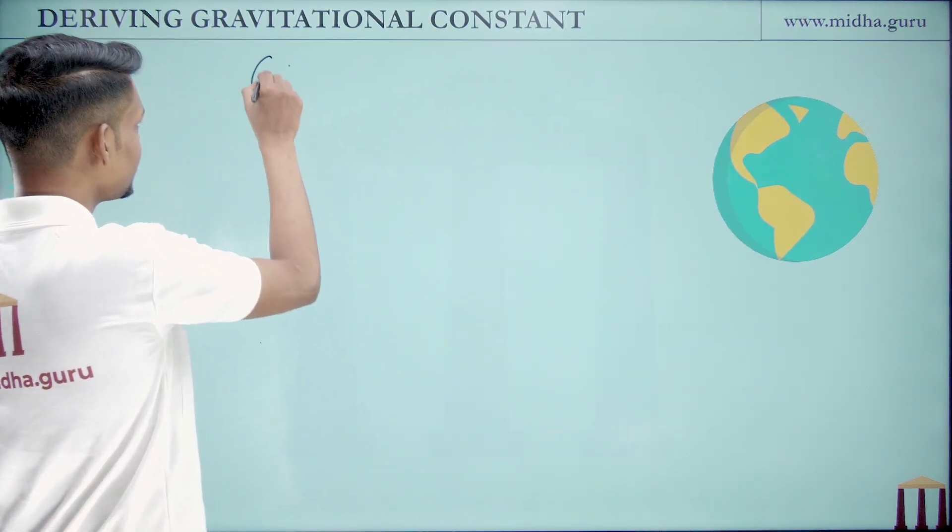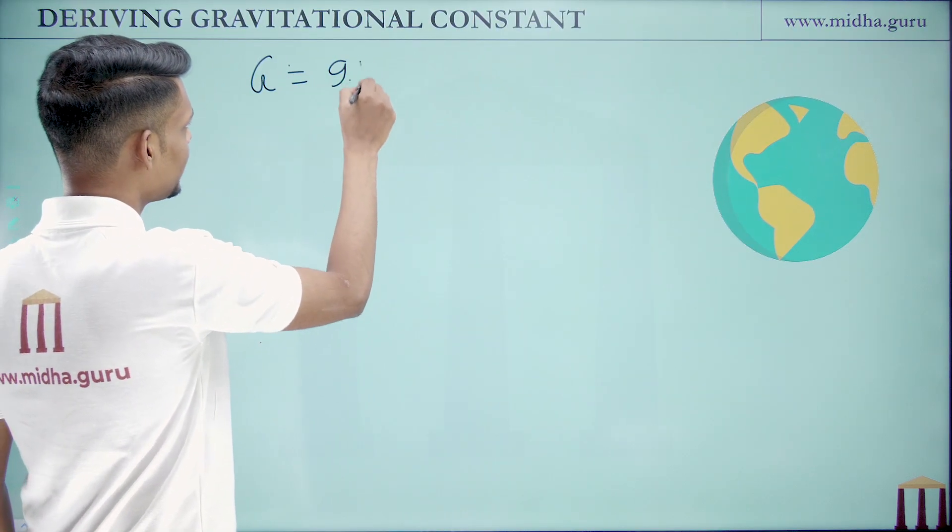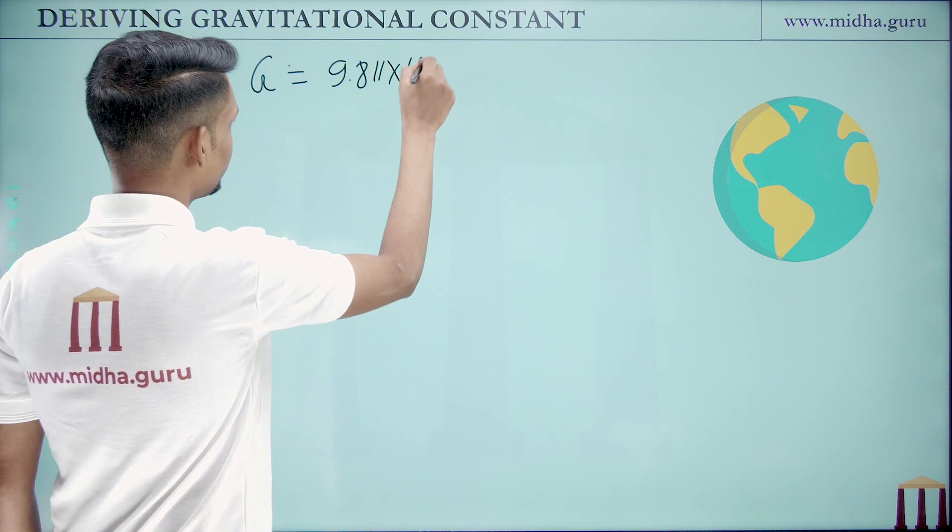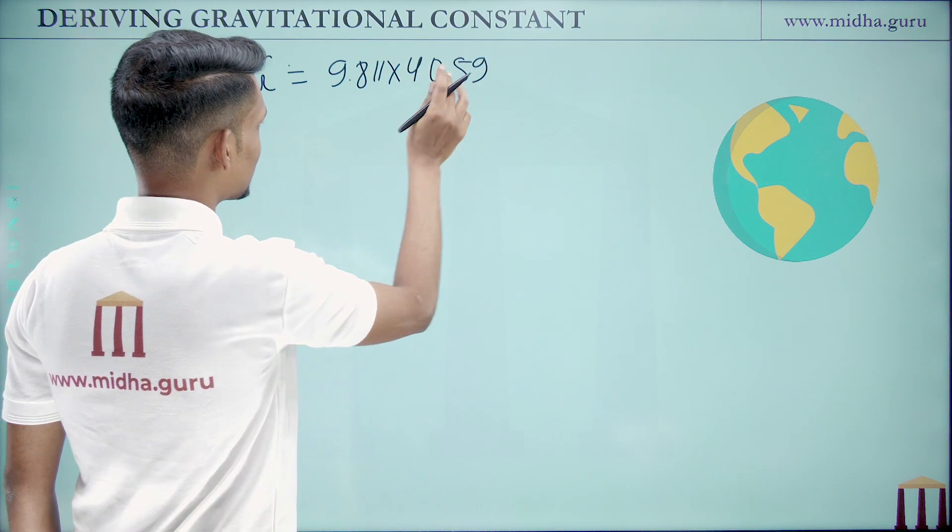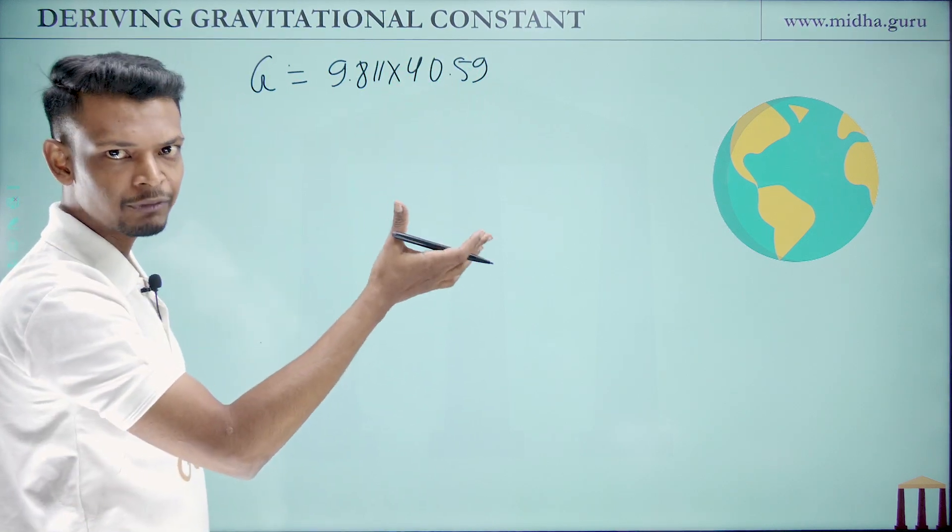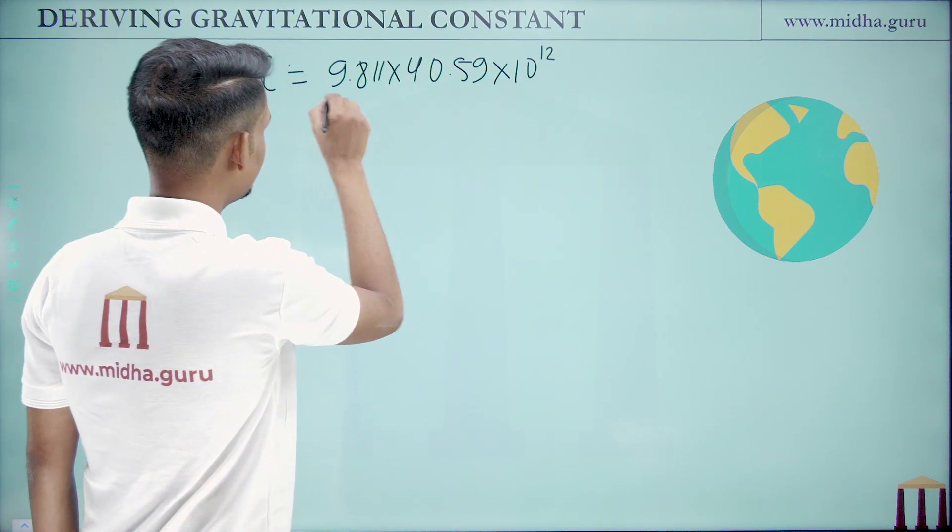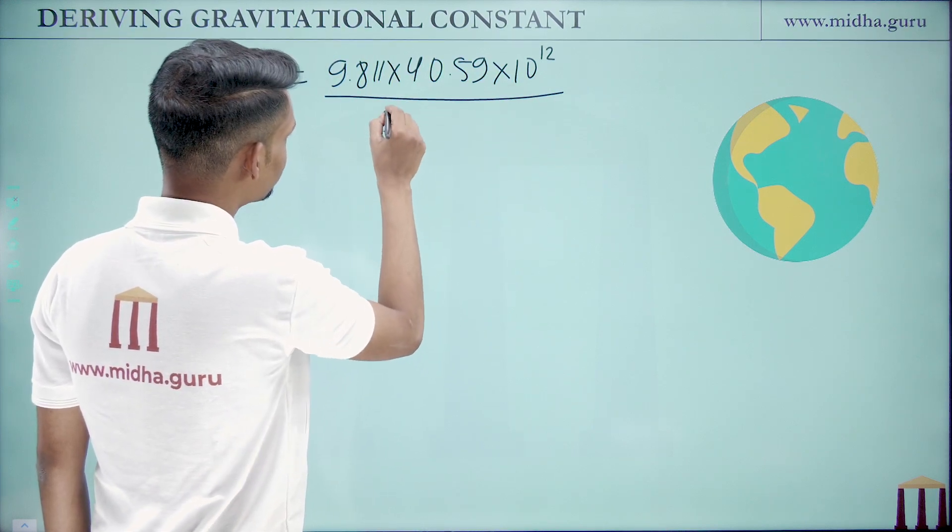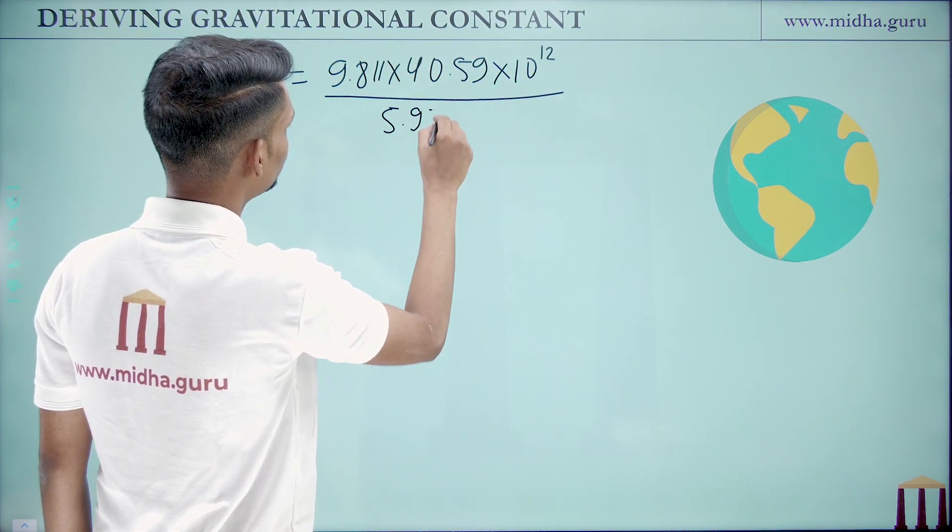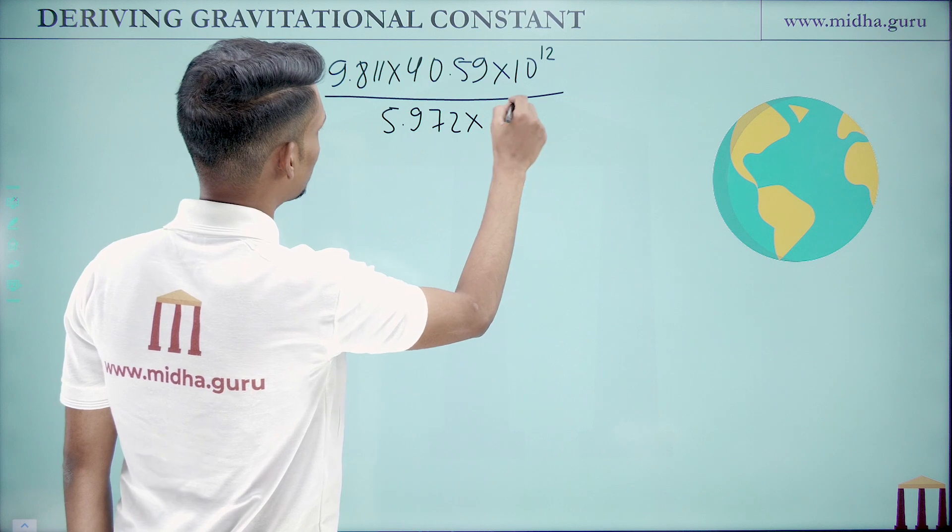Next we can write G is equal to 9.811 times 40.59, which is actually the square of that number we had for the radius of the Earth, times 10 to the power 12 divided by 5.972 into 10 to the power 24.